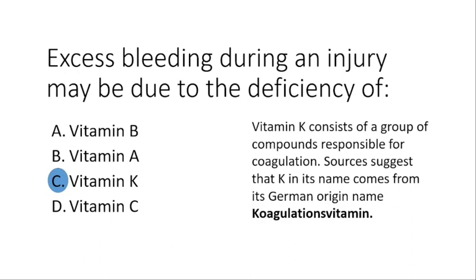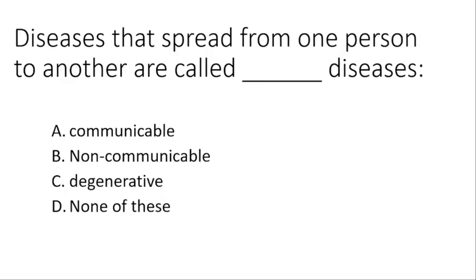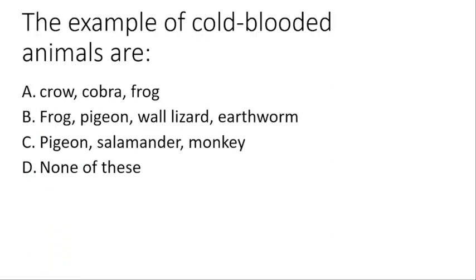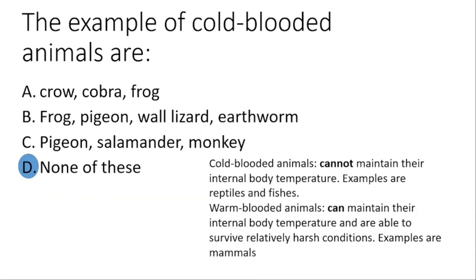Excess bleeding during an injury may be due to deficiency of vitamin K. It consists of a group of compounds responsible for coagulation. According to various sources, the 'K' in vitamin K comes from its German origin, meaning coagulation's vitamin. Next question: diseases that spread from one person to another are called communicable diseases.